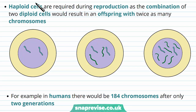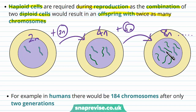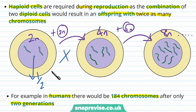This is important: if the gametes are haploid cells, then when they come together they will produce a cell that has a full set of chromosomes. Haploid cells are required during reproduction because the combination of two diploid cells would result in an offspring with twice as many chromosomes. So if gametes were left as a full set (2N) and joined with another gamete (2N), we'd form 4N, then 8N, and every generation would have twice as many chromosomes. In humans, for example, there would be 184 chromosomes after only two generations. So haploid cells are important in keeping this down — when two N's come together it will always make 2N.